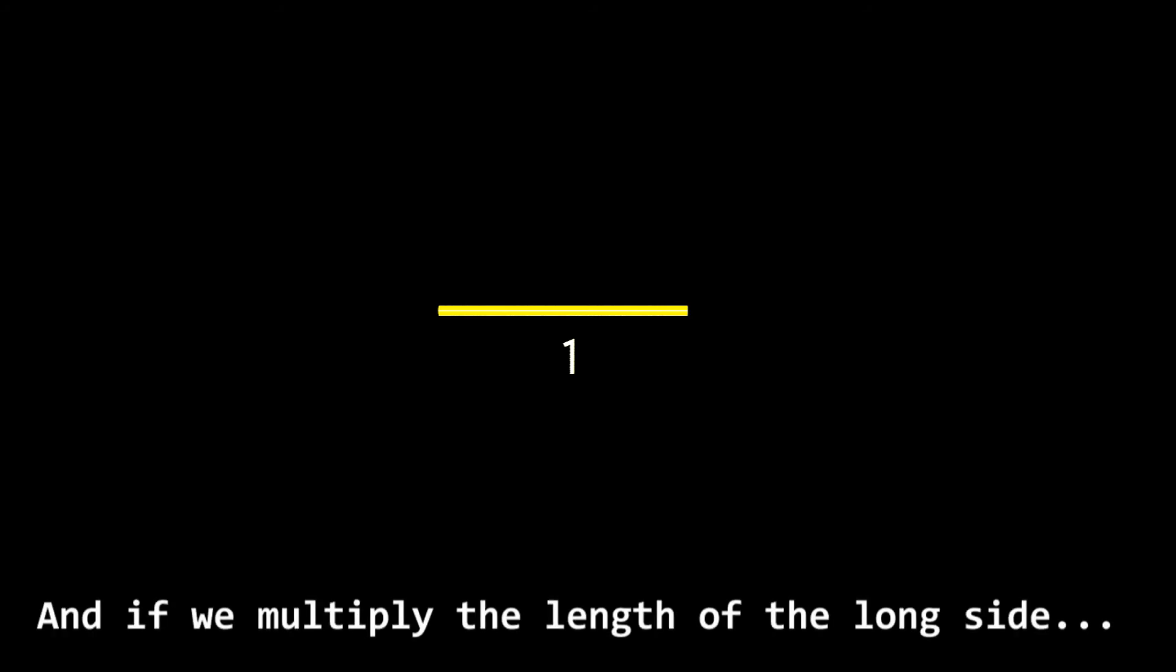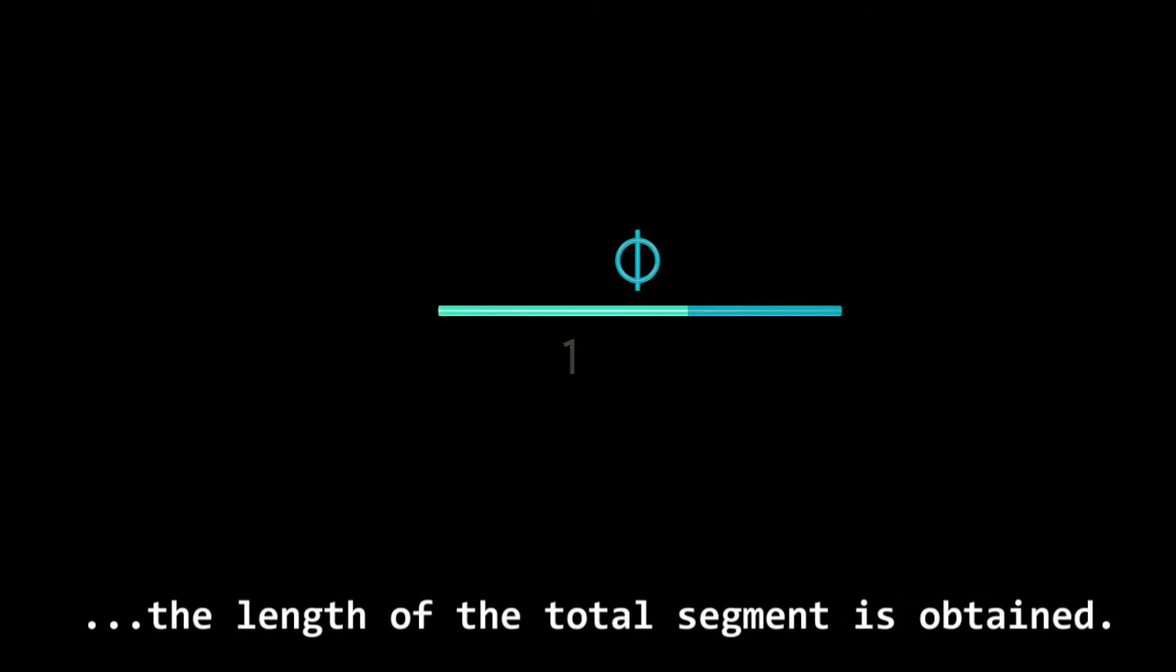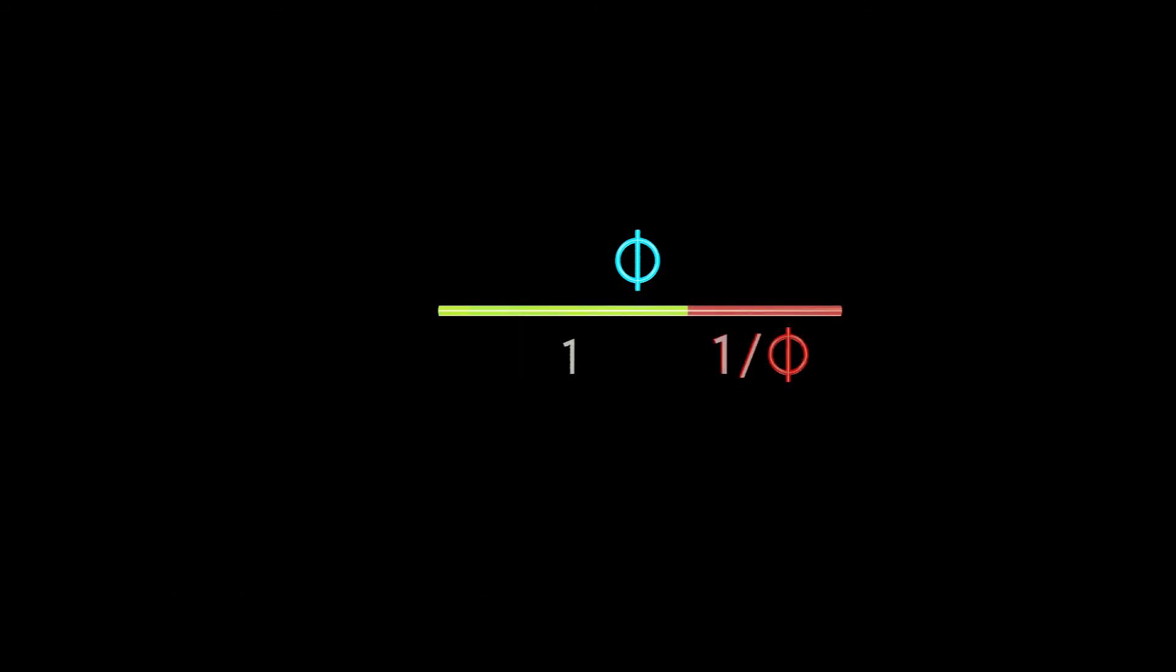If we multiply the short side's length by Phi, we obtain the length of the long side. And if we multiply the length of the long side by Phi, the length of the total segment is obtained. The segments that follow this proportion are called golden segments.